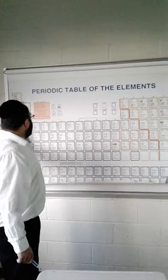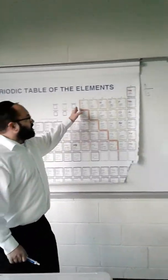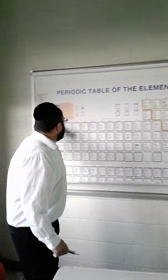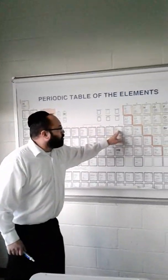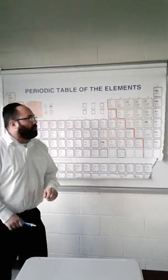The first two groups or columns are the s-block. Groups 13 through 18, the end over here, are called the p-block. The boys in the middle, 3 through 12, are the d-block, and the boys on the bottom, to save space, are called the f-block.